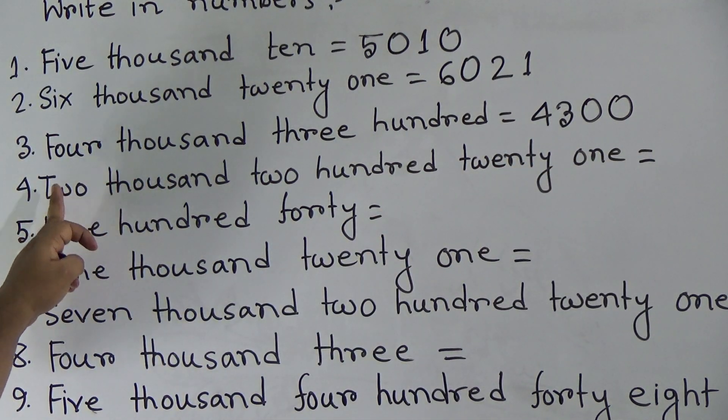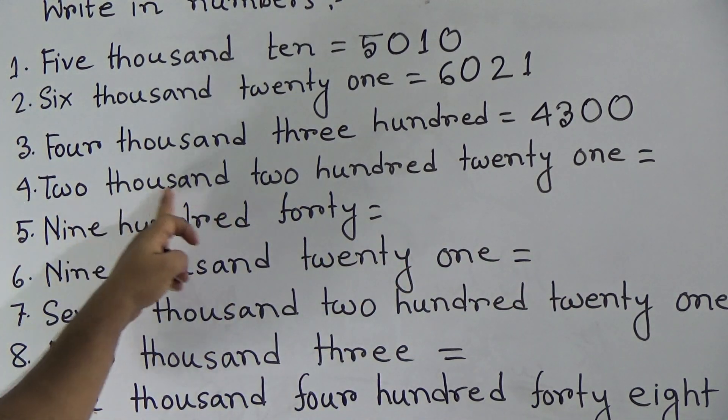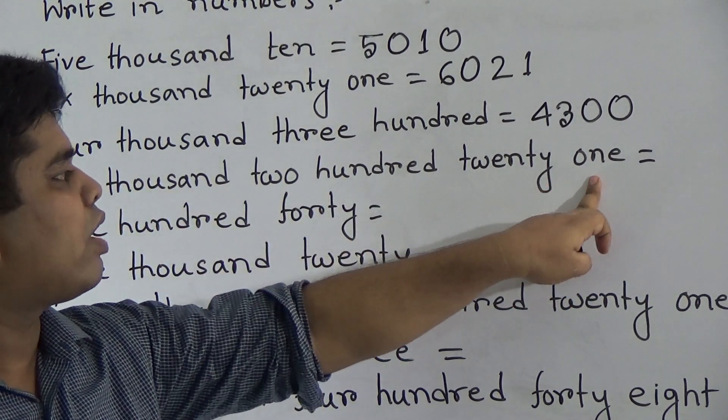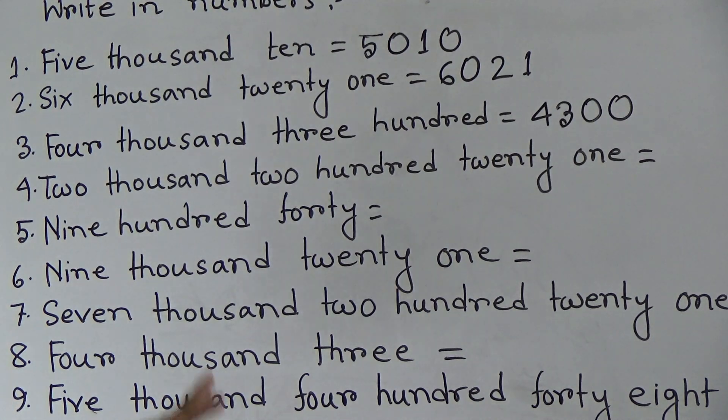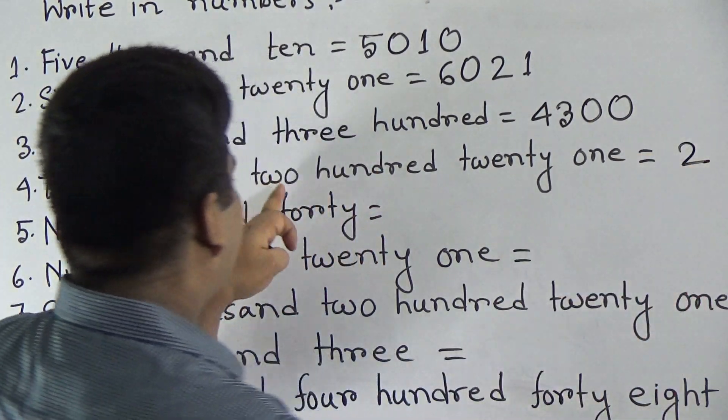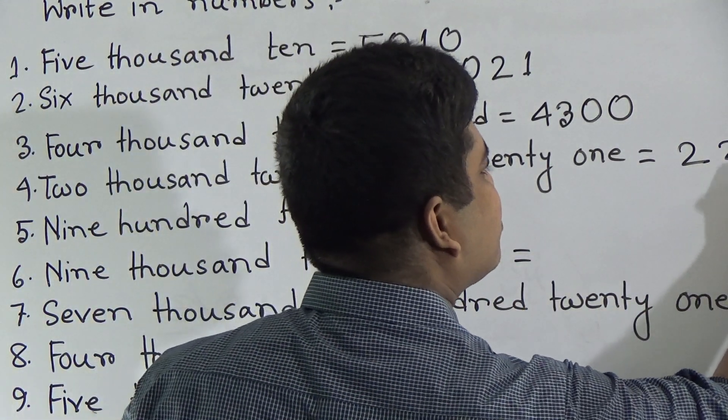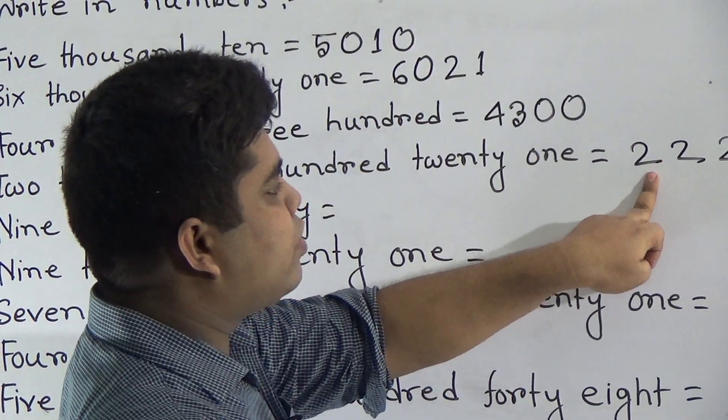And our next number is 2221. All are present here. So, we write this 2000 as 2. Then, 200. So, write another 2 and 21. We write 21, 2, 1 and read as 2221.